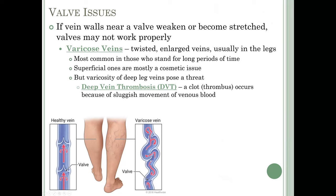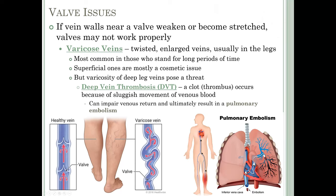A DVT clot not only can impair venous return, it can ultimately result in a pulmonary embolism. Blood coming back from the legs travels up through the inferior vena cava into the right atrium, then to the right ventricle, then out through the pulmonary trunk into the pulmonary arteries. So the first place a clot that breaks free from a leg vein will land is in the lungs — that is what we call a pulmonary embolism.